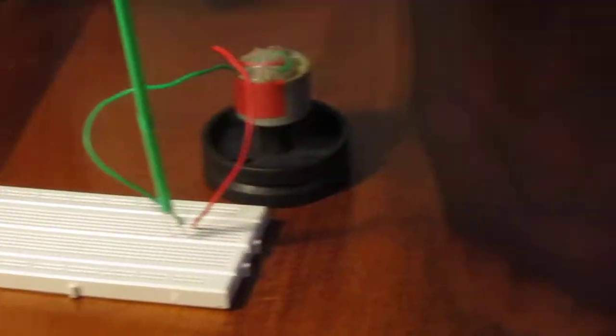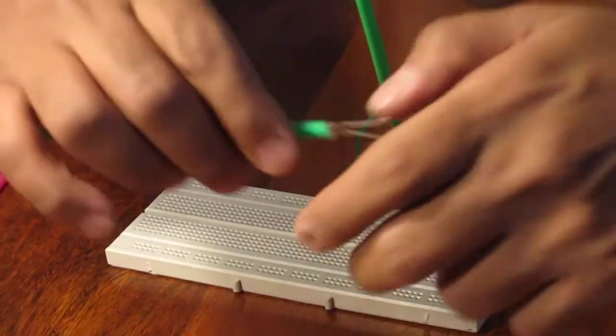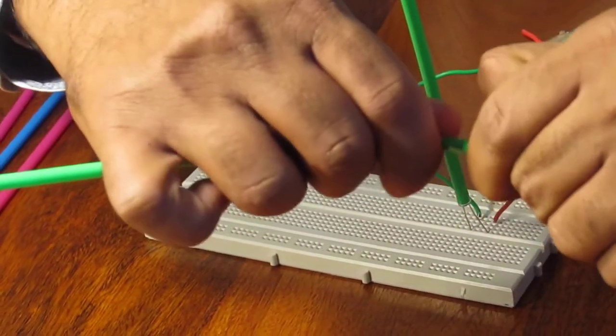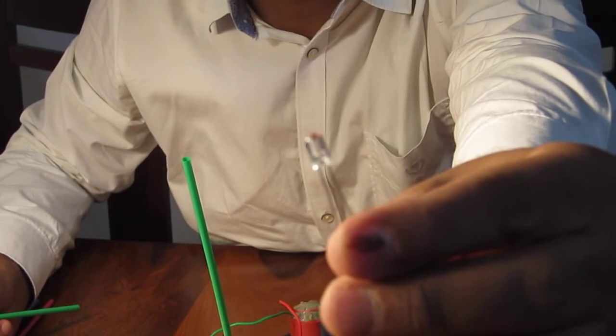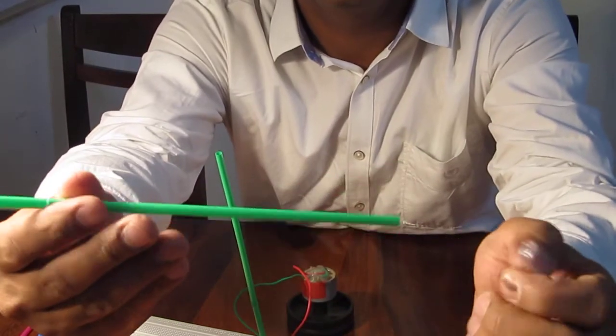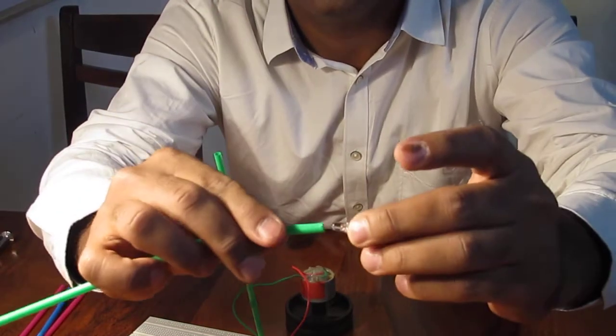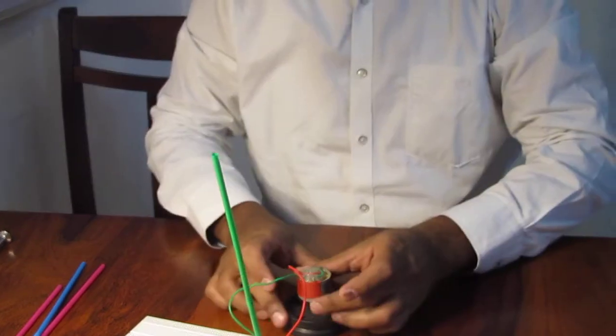Now we are ready, all set. Pay attention. I have a breadboard with something here. It's basically a LED, you can see the LED clearly. And this is a straw, a drinking straw. Now I just put this here like this, that's the arrangement.